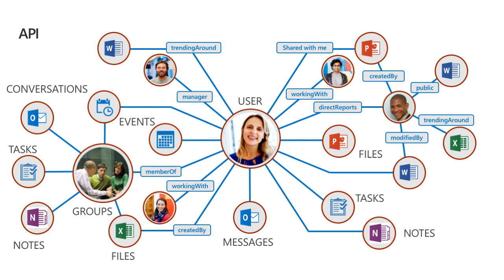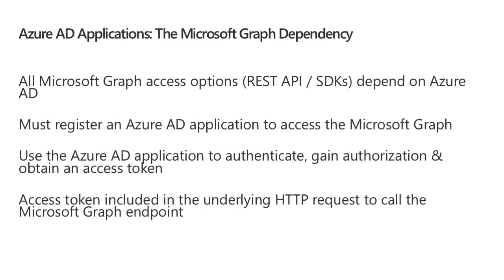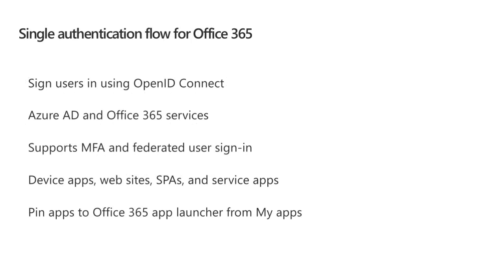This is just a sample of what you can do with the Microsoft Graph and the REST API — all native SDKs support the same things too. Now let's talk about Azure AD applications and the Graph dependency. All Microsoft Graph access options — the REST API or the SDKs — all depend on Azure AD. So we're going to have to first register an Azure AD application to access the Microsoft Graph, then use that application to authenticate, gain authorization, and obtain an access token, which is included in the Authorization header of the HTTP request.